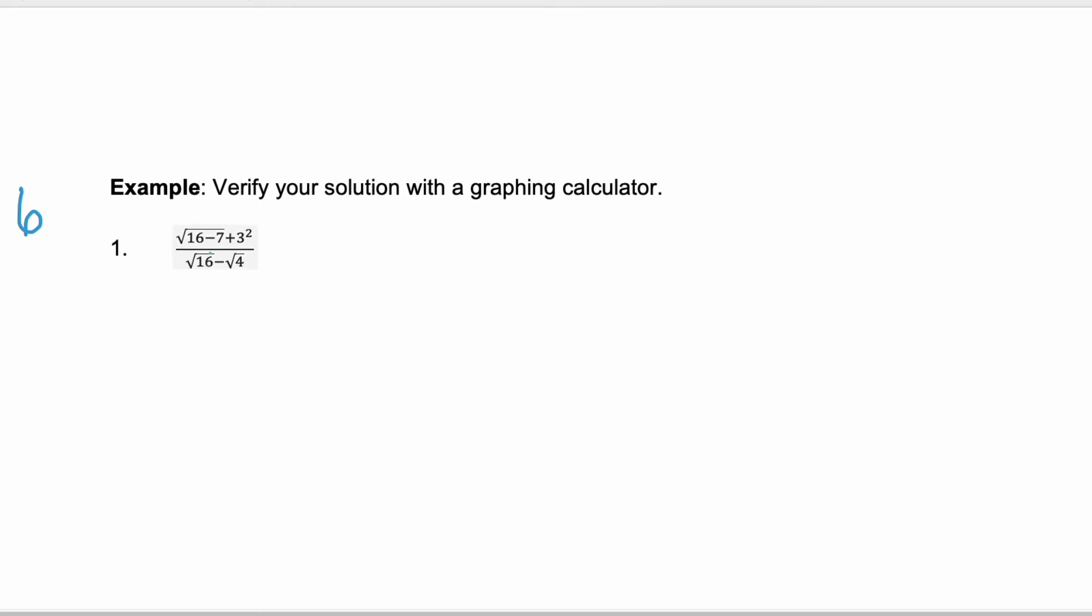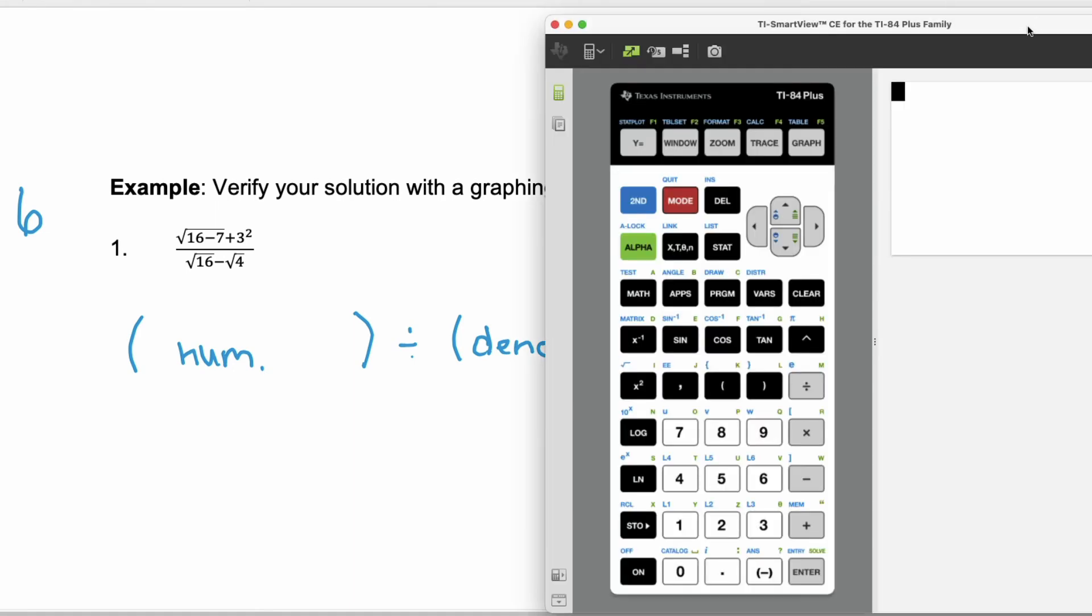Now we're going to separate the numerator and the denominator. So first we're going to enter the numerator. And when we do that, we're going to use parentheses to show that we have the numerator. So we'll put our numerator in and then we're going to do division and then we'll put in our denominator. So let's look at that graphing calculator.